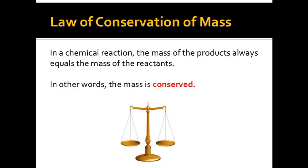After writing the chemical equation, the next step is to maintain the law of conservation of mass, which means the total number of atoms of reactants must equal the total number of atoms of products. According to this law, in a chemical reaction, the mass of the products always equals the mass of the reactants — in other words, mass is always conserved.